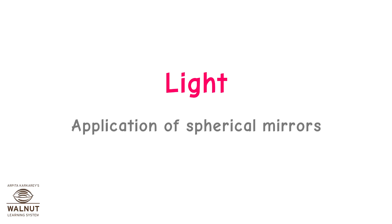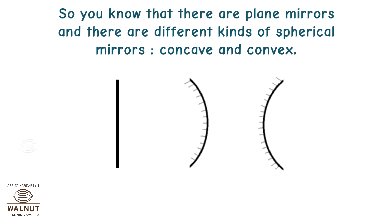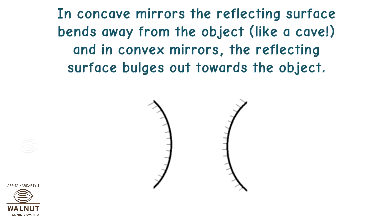Light Application of Spherical Mirrors. There are plain mirrors and different kinds of spherical mirrors — concave and convex. In concave mirrors, the reflecting surface bends away from the object like a cave. In convex mirrors, the reflecting surface bulges out towards the object.